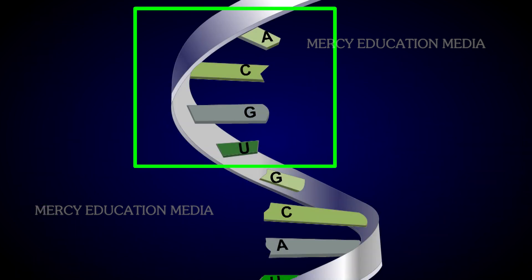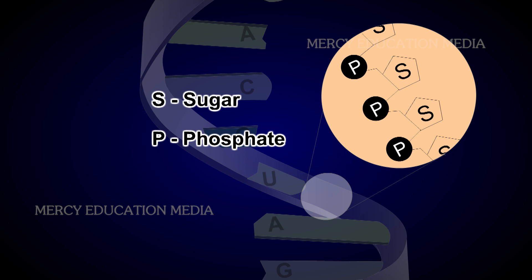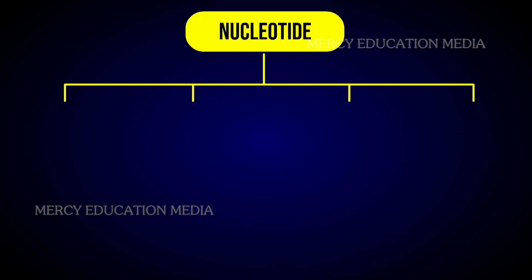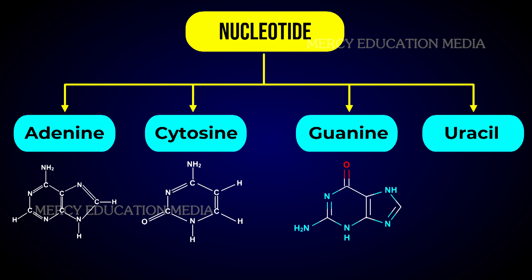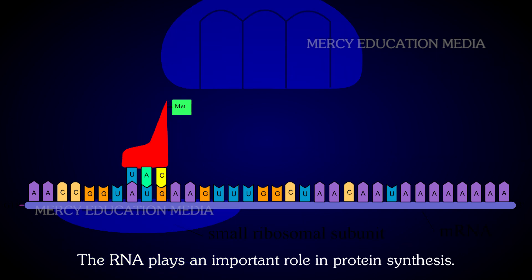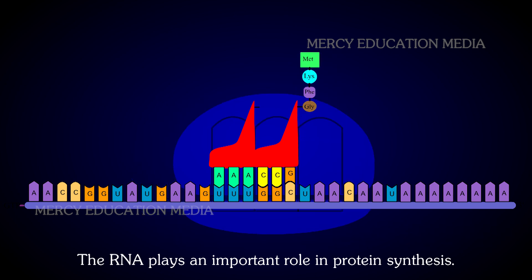There are 4 types of nucleotides having 4 different nitrogenous bases, but sugar and phosphate are common for all nucleotides. The 4 nucleotides are adenine, cytosine, guanine, and uracil. RNA plays an important role in protein synthesis.